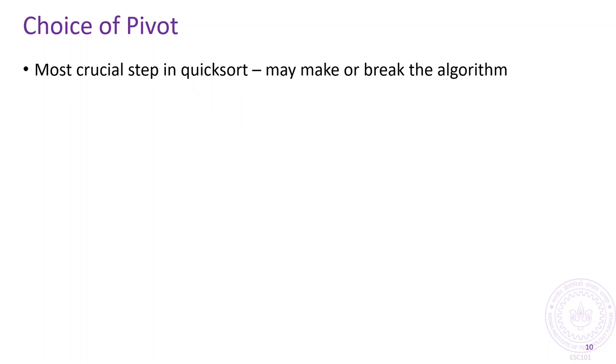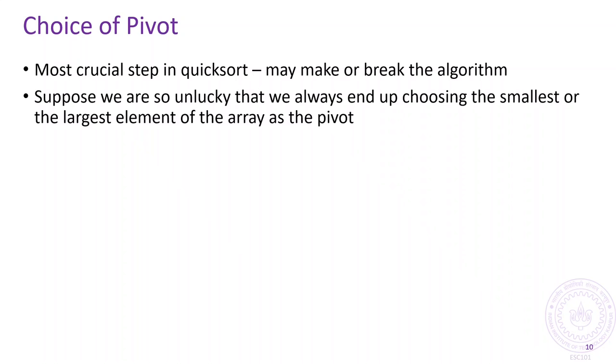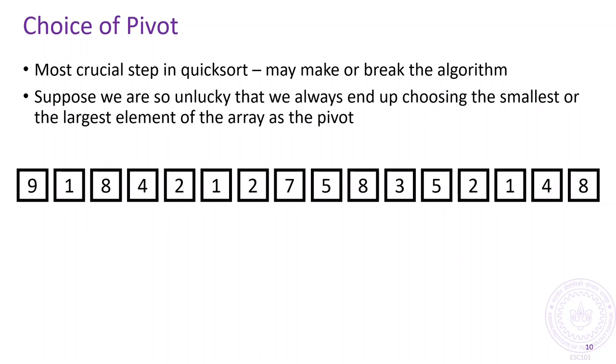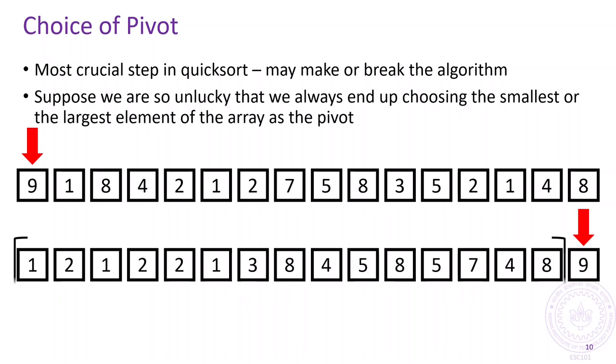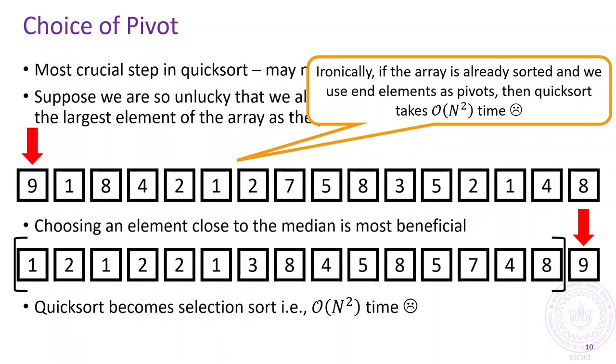The choice of pivot is crucial to the quicksort algorithm. Bad pivots are those for which, once we partition, either the left or the right array is very small. To take an extreme example, suppose we choose the smallest or the largest element of the array as the pivot. Then one of the arrays would be completely empty and quicksort would end up having an order n-square time complexity. Pivots that are around the median are most beneficial. However, choosing a random element is often sufficient to avoid the bad cases with high probability.